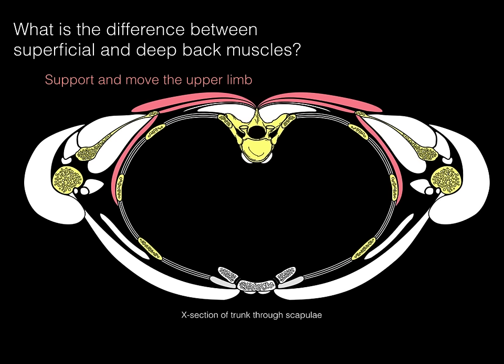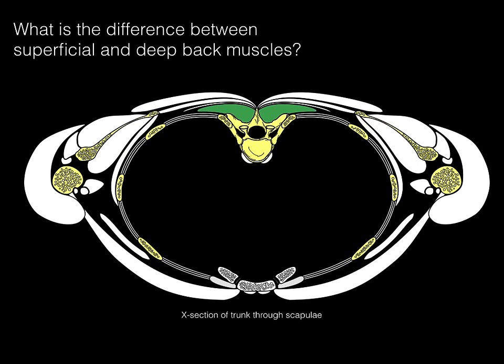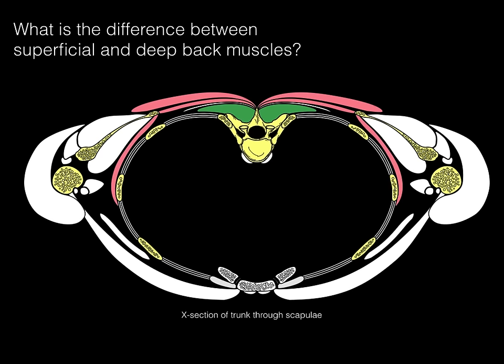These muscles are on the back, but they're not really back muscles. They're innervated by ventral rami branches from spinal nerves, which innervate upper limb muscles, not deep back muscles. In green are the deeper located back muscles, all along the spinous processes — sometimes called paraspinal muscles for being beside the spine. These deep back muscles support and move the vertebral column, and they're innervated by the dorsal rami branches of spinal nerves that go to the true deep, or intrinsic, back muscles. We're going to focus on the pink muscles, the superficial back muscles.